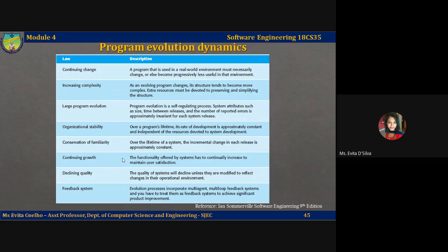Lehmann's fourth law, organizational stability, states that over a period of the program's lifetime, its rate of development is approximately constant, independent of the resources devoted to system development. The fourth law suggests that most large programming projects work in a saturated state, that is, a change to resources or staffing has imperceptible effects on the long-term evolution of the system.